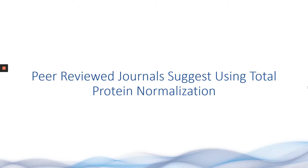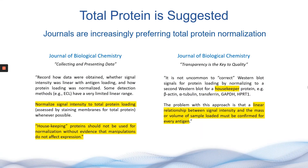When it comes to selecting between the two, there are experimental variables that will help determine which method a lab will utilize. Many peer-reviewed journals as well as the NIH are now suggesting that researchers use total protein for normalization instead of housekeeping proteins. The JBC says housekeeping proteins should not be used for normalization without evidence that manipulations do not affect expression — meaning validation needs to occur to ensure that experimental conditions do not change the expression of these proteins.